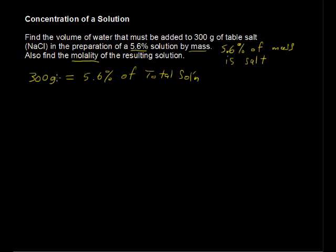So putting that into an equation, that would be 300 equals 0.056 times total, I'll use T for total, and then solving for T.